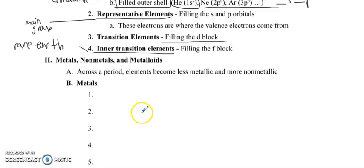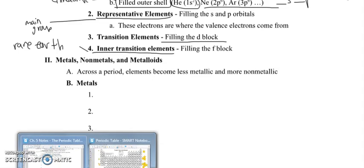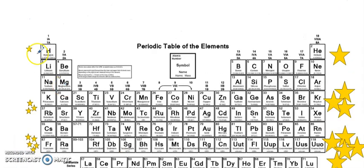Okay, now let's go and go through and look at metals, nonmetals, and metalloids. So across a period, elements become less metallic and more nonmetallic. What that means is elements on the left of the periodic table are metals and elements towards the right are nonmetals. So in general, we've got metals towards the left, and we have nonmetals over here on the right. That's our general rule.